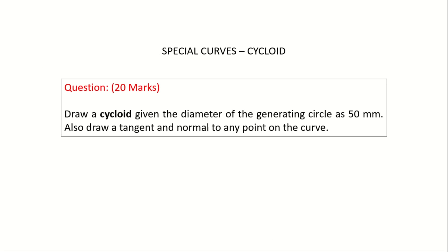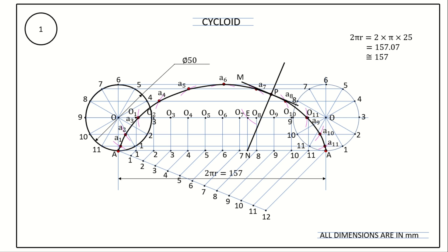The question is: draw a cycloid given the diameter of the generating circle as 50 millimeter. Also, draw a tangent and normal to any point on the curve. At the end of the video, we will clearly understand how to draw this in step-by-step practice.